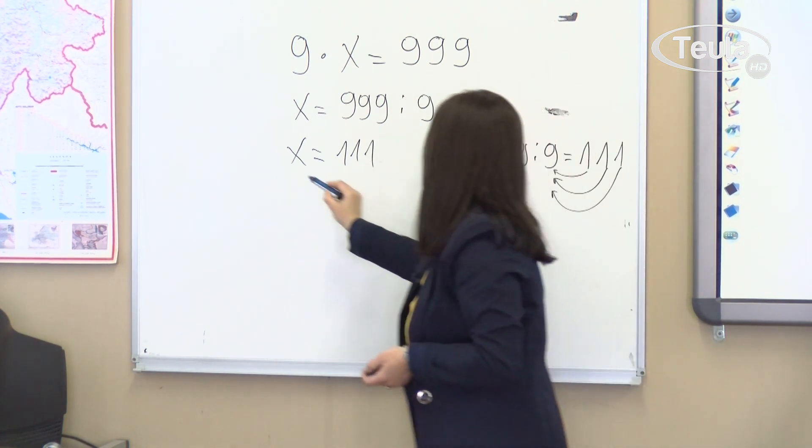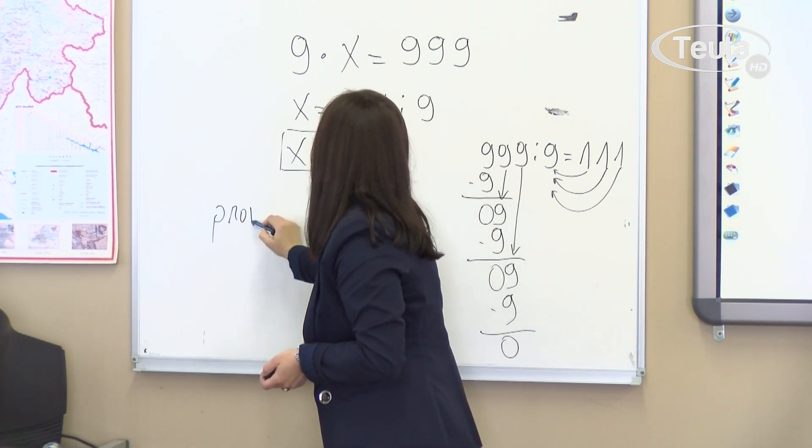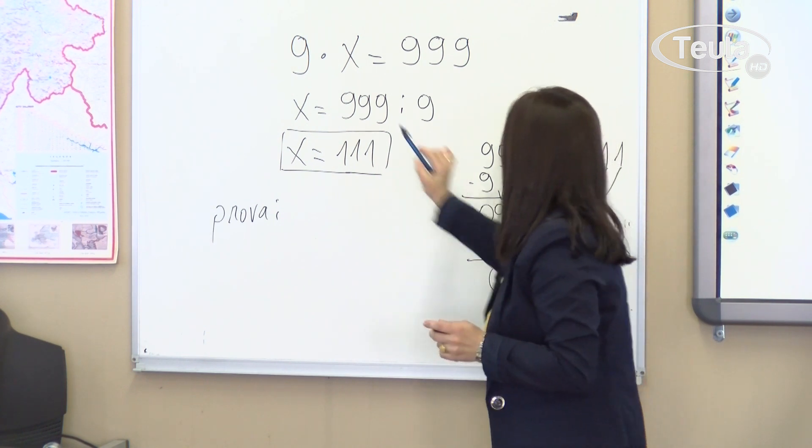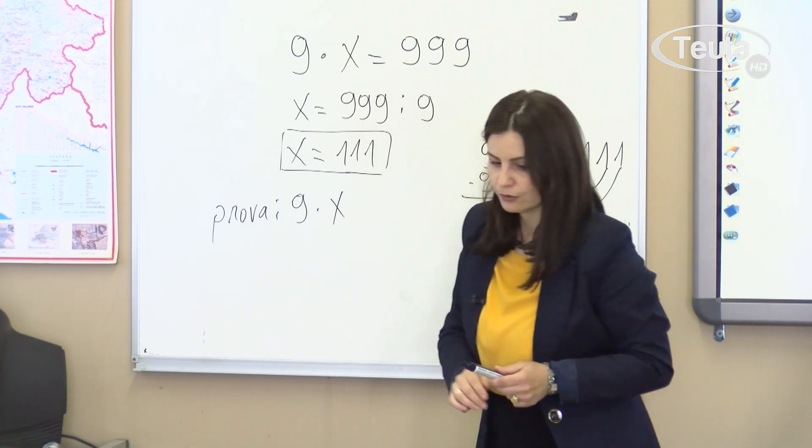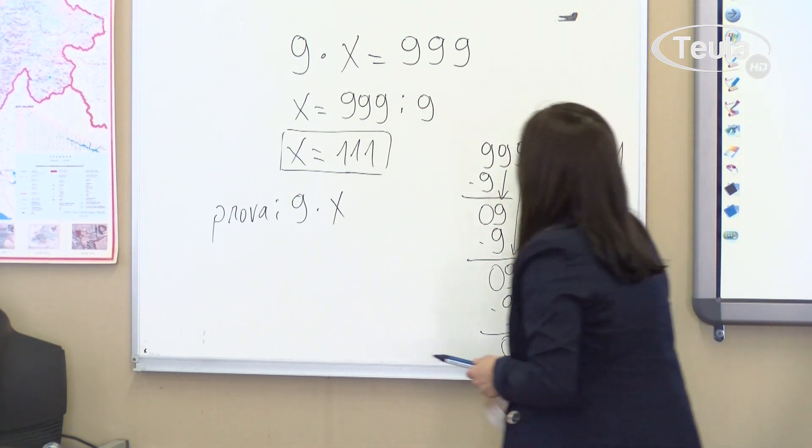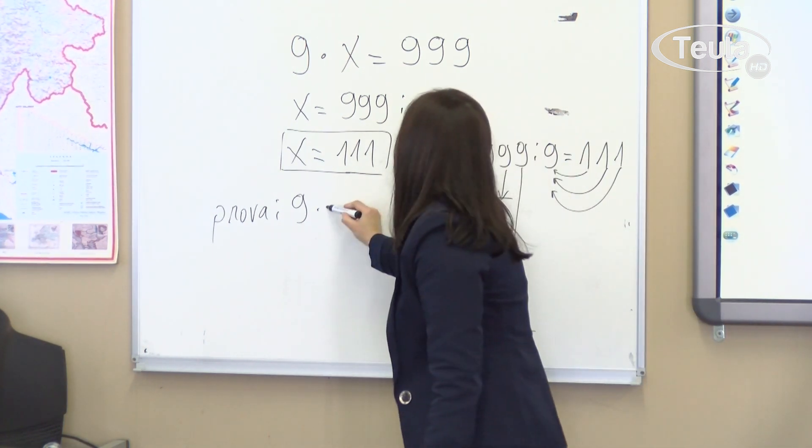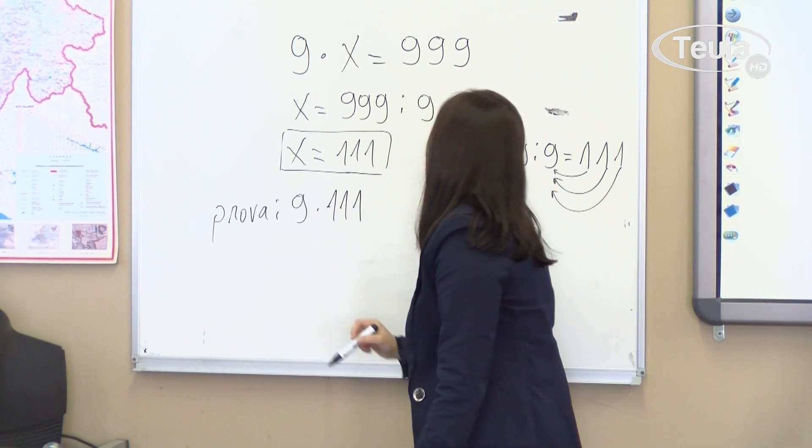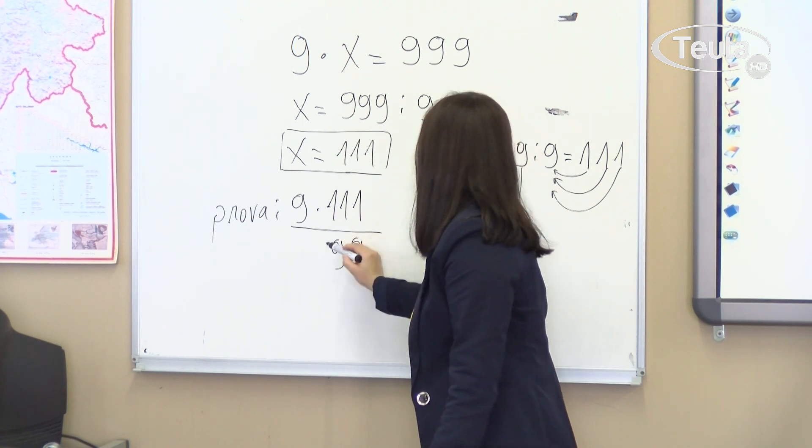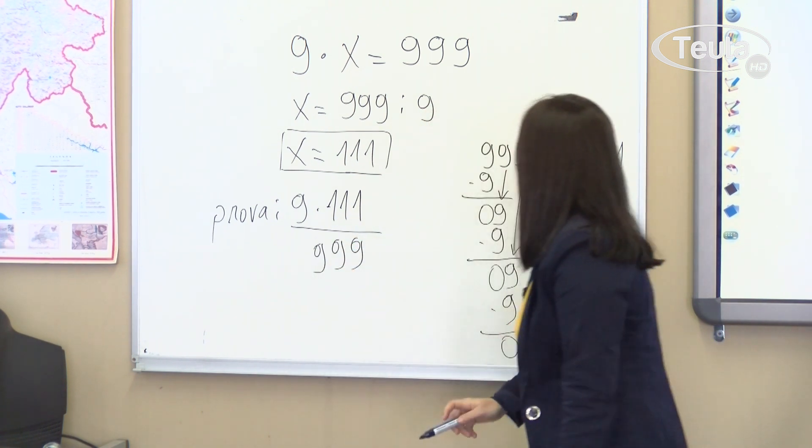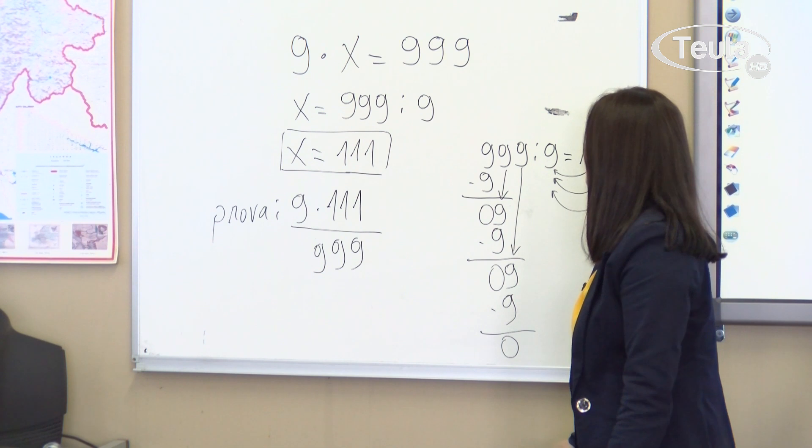Now we need to do the proof. How do we do the proof? Proof: Now I'll substitute. 9 times x. For x in this case we don't write x, but we substitute it with 111. Let's multiply. 9 times 1 is 9. 9 times 1 is 9. 9 times 1 is 9. We got the proof correct, which means we solved the equation correctly.